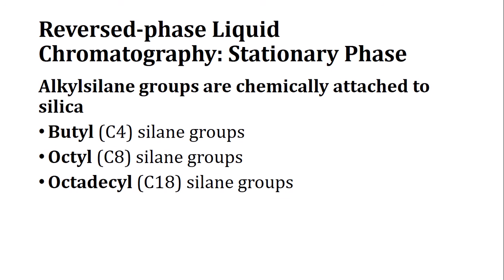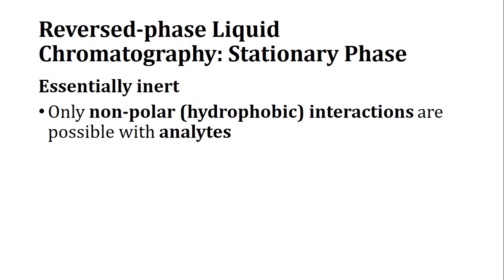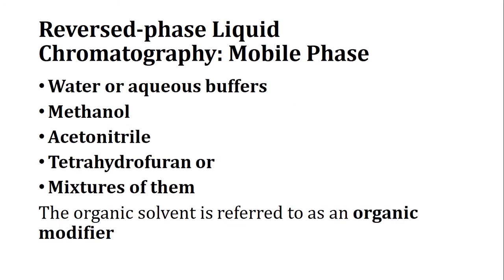The stationary phase can have C4 (butyl), C8, or C18 (octadecyl alkyl) groups. The stationary phase is essentially inert, and only non-polar or hydrophobic interactions with analytes are possible, so this stationary phase does not hinder polar analytes significantly.